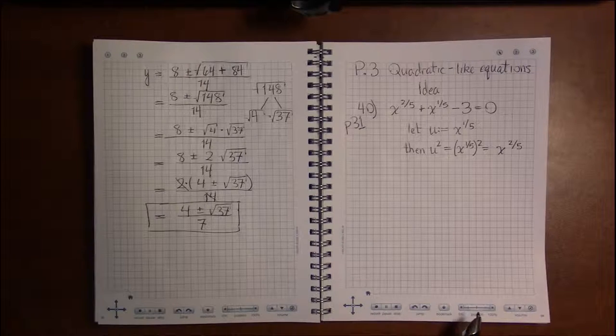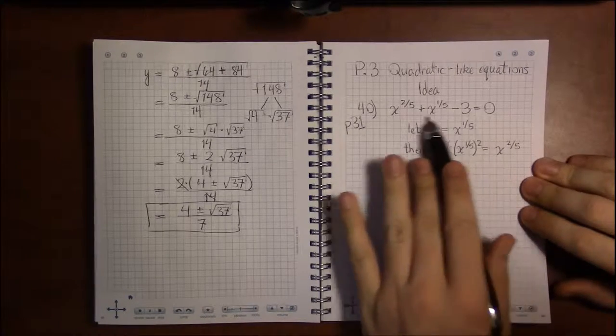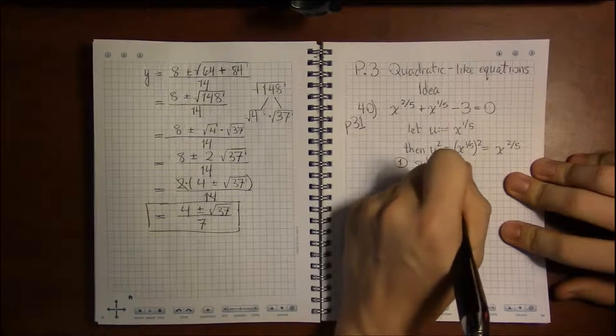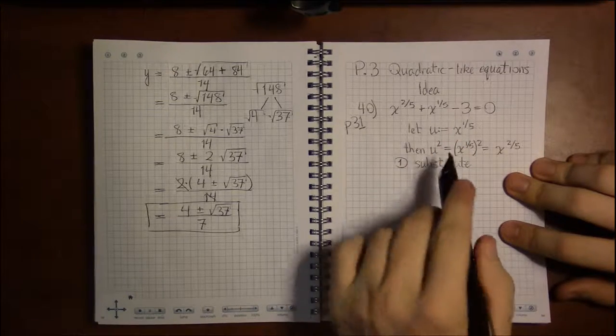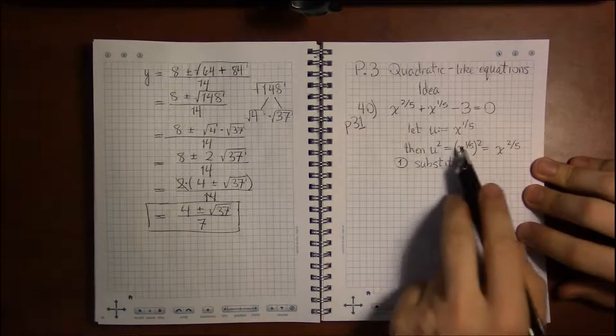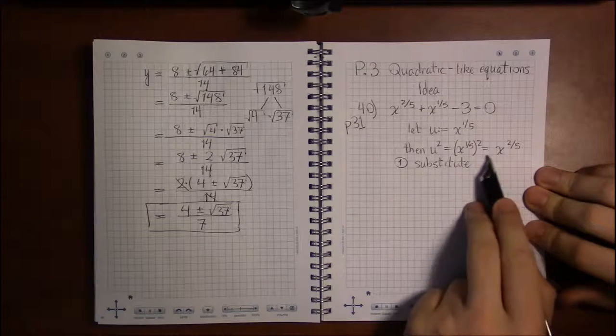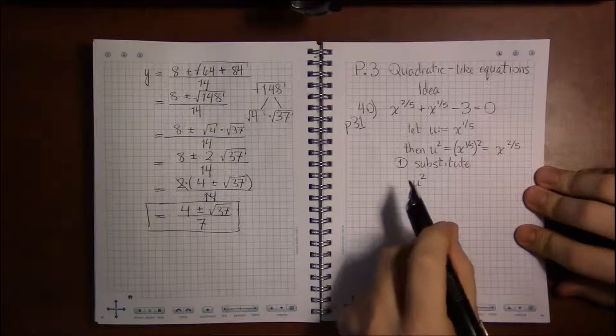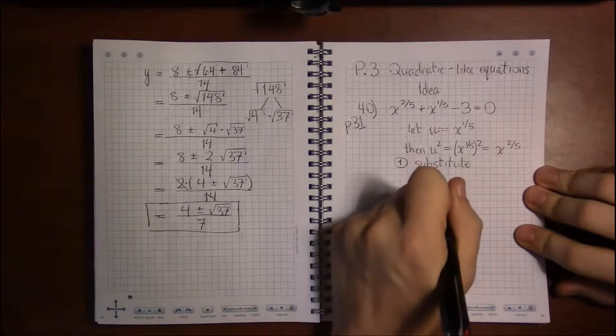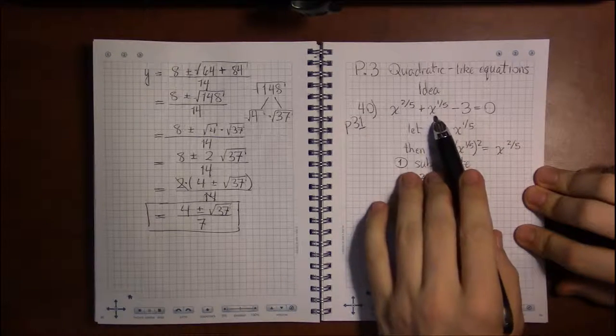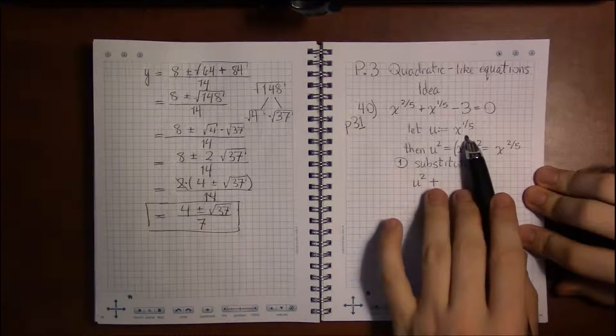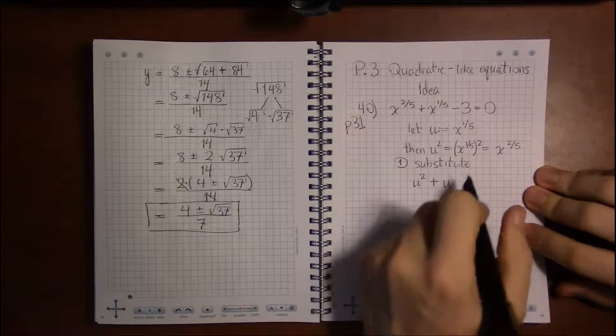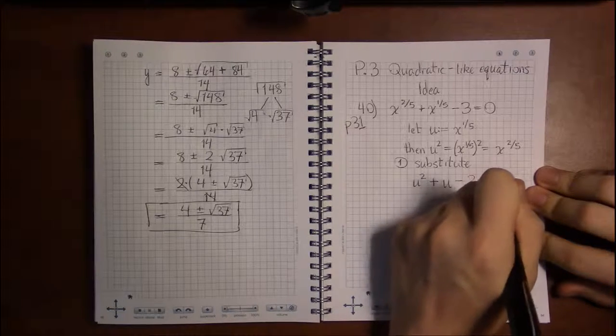So let's see if we can rewrite this equation with just u's now. So our first step has been substitute. And if we substitute, let's see, x to the two-fifths, how can I replace that with something involving u? Well, x to the two-fifths is u squared. So instead of x to the two-fifths, I only want to write stuff down that involves u's. Next thing, plus, that can be copied down no problem. x to the one-fifth, I don't want to write x's. These are ugly. I want to write u's instead. But x to the one-fifth is u. So instead of x to the one-fifth, I can just write u.